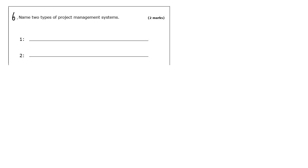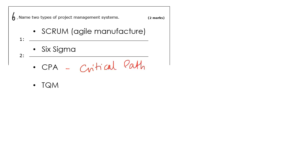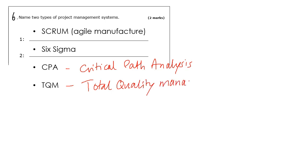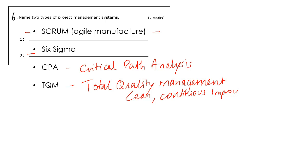Question 5: name two types of project management systems. There are four in the book: critical path analysis (already covered), TQM (total quality management), Scrum, and Six Sigma. Scrum is all about working in a team to meet goals in short time-scale sprints, being agile and making changes quickly. Goals are specified and feedback is daily, allowing quick response to issues. Six Sigma is probably the weirdest one, so we'll go through that in more detail.